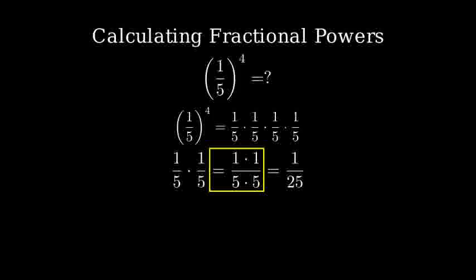Next, we multiply this result by another one-fifth. One times one in the numerator is still one, and twenty-five times five in the denominator gives us one-hundred-twenty-five.